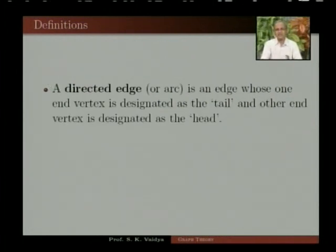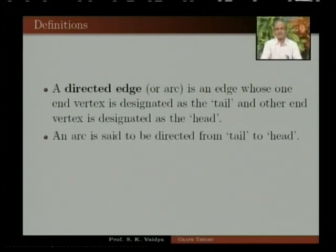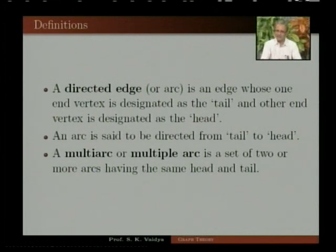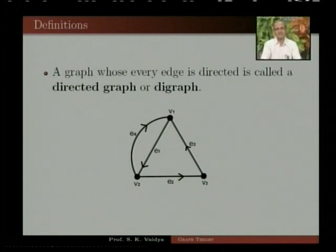A directed edge or arc is an edge whose one end vertex is designated as the tail and the other end vertex is designated as the head. An arc is said to be directed from tail to head. A multi-arc or multiple arc is a set of two or more arcs having the same head and tail. A graph whose every edge is directed is called a directed graph or digraph.